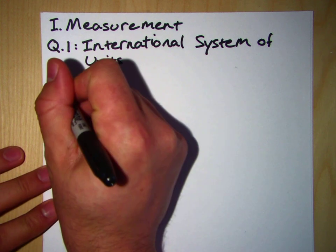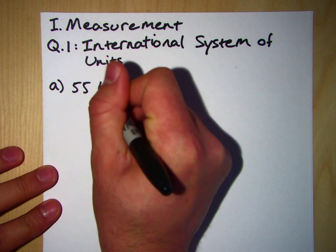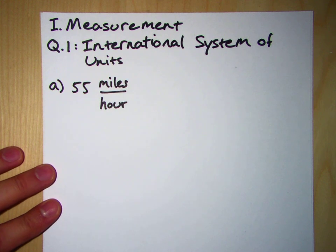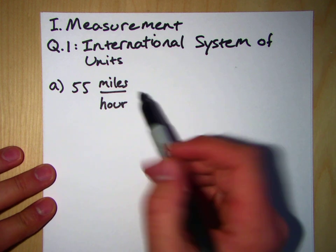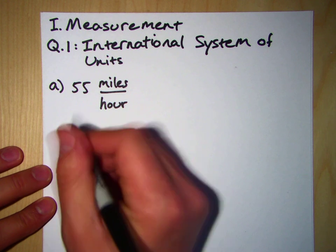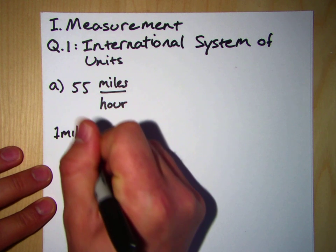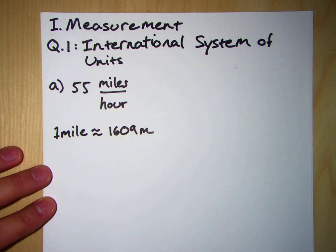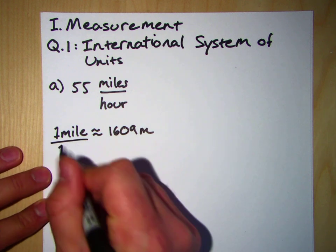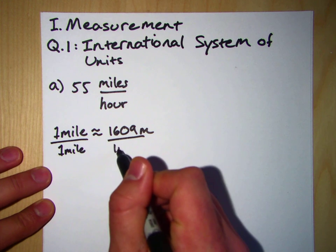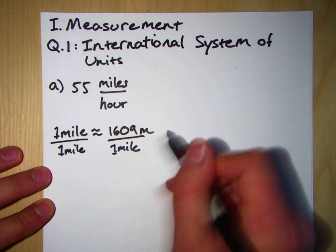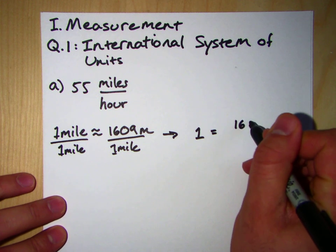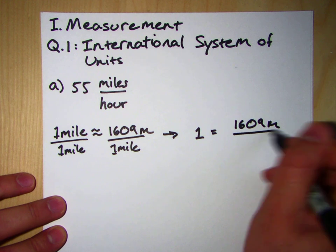So let's start with part A here, and we want to convert 55 miles per hour into the equivalent value in meters per second. Let's start with the top. Let's start with miles. We know from any physics textbook, you can probably find this in the appendix, that one mile is about equal to 1,609 meters. So if we divide both sides by, in this case, one mile,